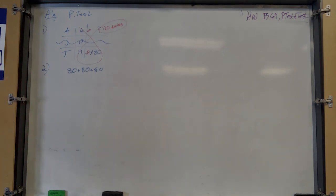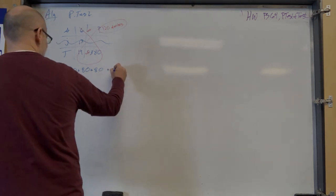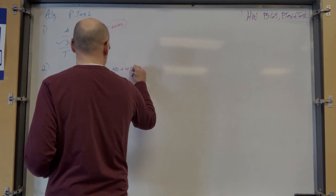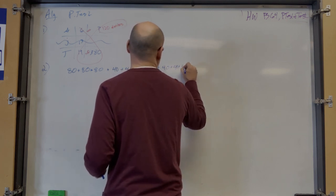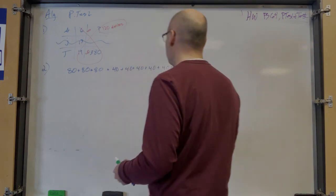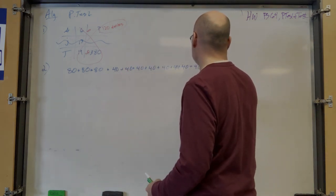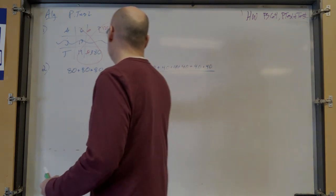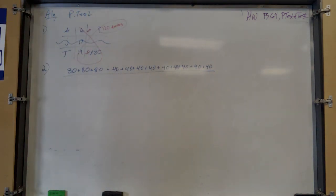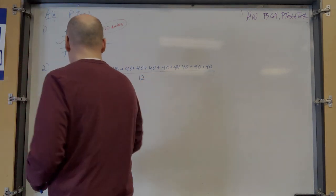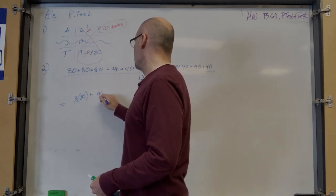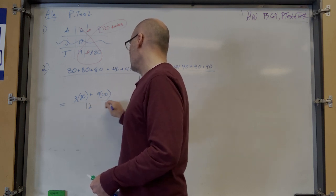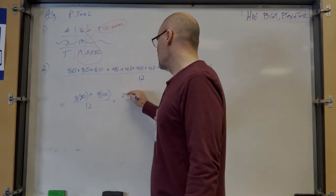The average of the next nine numbers was 40, so assume nine 40s. There's an easier way to add the same thing multiple times. All divided by how many numbers total — nine plus three is 12. So: three times 80 plus nine times 40, all divided by 12. That's 240 plus 360 equals 600.